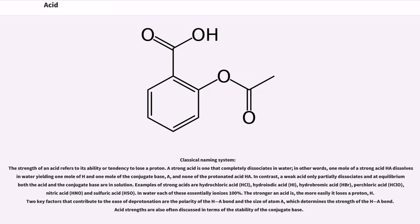The strength of an acid refers to its ability or tendency to lose a proton. A strong acid is one that completely dissociates in water; in other words, one mole of a strong acid HA dissolved in water yields one mole of H+ and one mole of the conjugate base (A-) and none of the protonated acid HA. In contrast, a weak acid only partially dissociates; at equilibrium both the acid and the conjugate base are in solution. Examples of strong acids are hydrochloric acid (HCl), hydroiodic acid (HI), hydrobromic acid (HBr), perchloric acid (HClO4), nitric acid (HNO3), and sulfuric acid (H2SO4). In water, each of these essentially ionizes 100%.